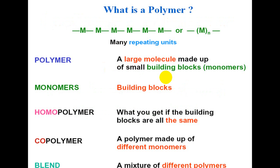What is a polymer? A polymer is a large molecule in which many, many units combine together by connecting each other to make a large molecule - that is called a polymer. Many repeating units combine in different patterns and in different ways. A polymer is a large molecule made up of small building blocks called monomers. They combine with each other and make a large molecule that is the polymer.